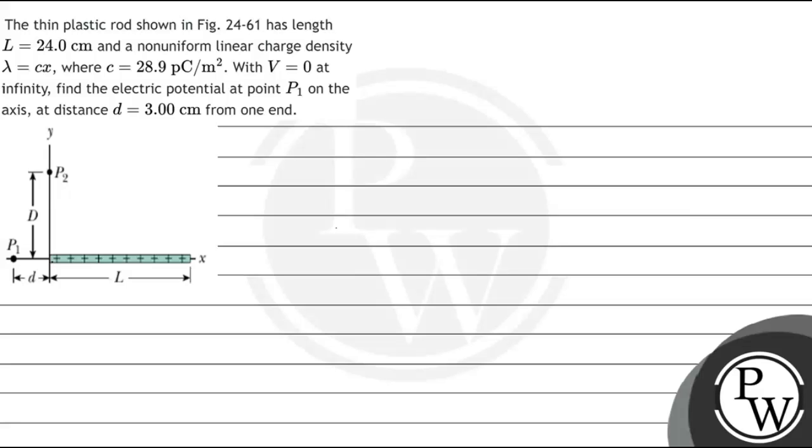Hello, let's read this question. It says the thin plastic rod shown in the figure has length L equal to 24 centimeters, and the non-uniform linear charge density lambda of x is C times x, where C is 28.9 picocoulombs per meter squared, with the voltage at zero at infinity. Find the electric potential at point P1 on the axis at distance D equals 3 centimeters from one end.